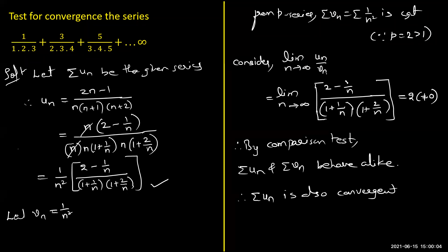In the mid-examination, we expect four questions from Unit 4. Unit 5 is not included for now. You can expect two questions from positive term series and two from alternating series. For positive term series, questions may come on comparison test, ratio test, or nth root test — and you will get two questions out of those three methods. We typically don't give two questions on the same method.